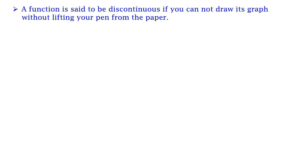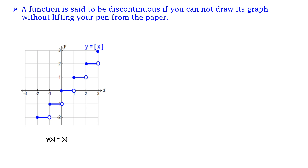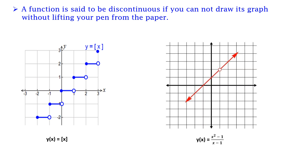What do we mean by a discontinuous function? A function is said to be discontinuous if you cannot draw its graph without lifting your pen from the paper. For example, the step function — you cannot draw this graph without lifting your pen. Also, take the graph y = (x² - 1)/(x - 1). At x = 1, the function is not defined, so it has a discontinuity there.